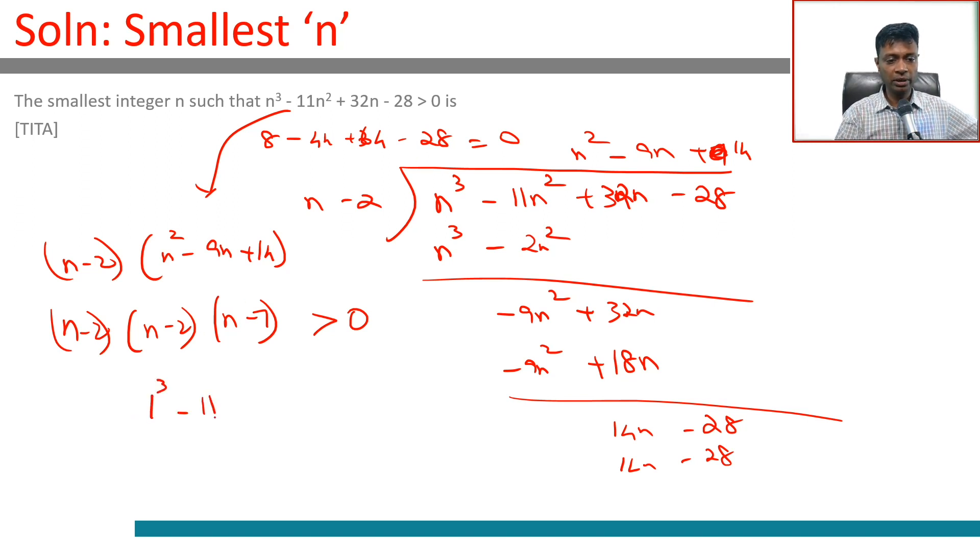When n = 1: 1³ - 11 + 32 × 1 - 28. 1 - 11 + 32 - 28, this is 33 - 39 = -6. This doesn't work when n = 1.